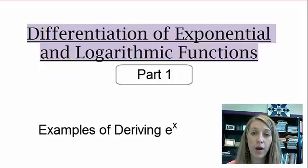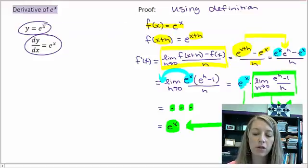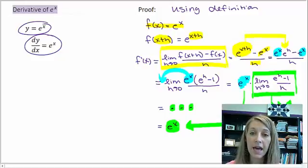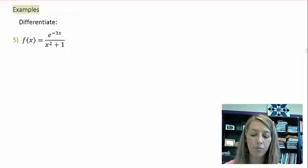So we're working on deriving exponential and logarithmic functions. We've only learned one so far, and that is the derivative of e to the x is e to the x. We've done a couple examples. Let's do a couple more.